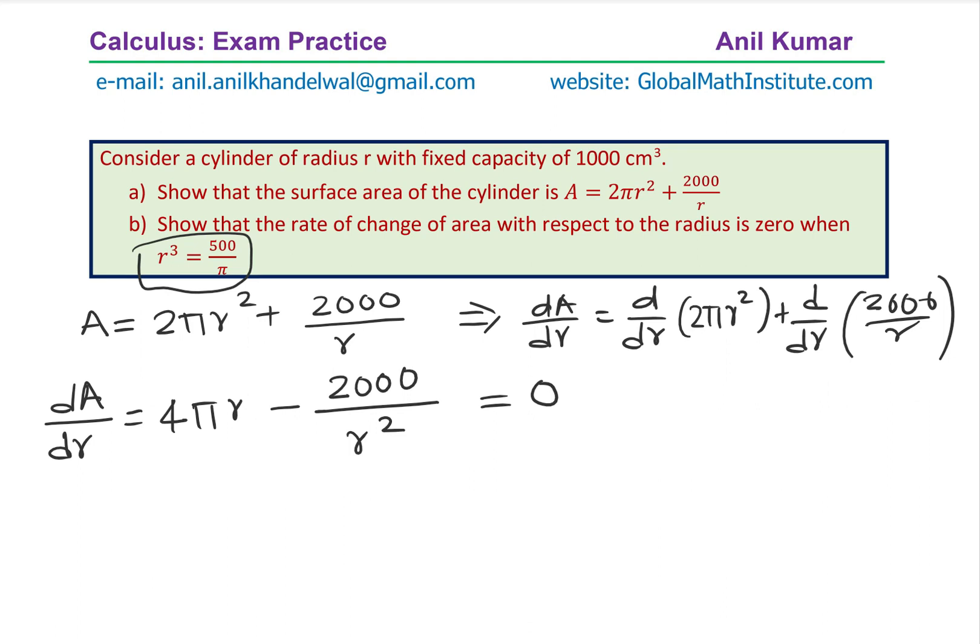And we can multiply this. So we get 4πR³ - 2000 = 0. Multiplying everything by R². And now we can rewrite this as 4πR³ = 2000. And we can now divide and isolate. So doing that, R³ = 2000/(4π). So 4 goes 500 times.